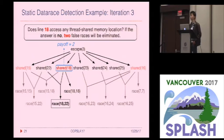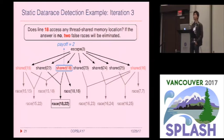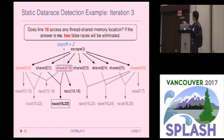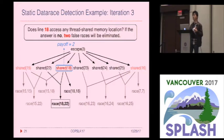In the very last iteration, we only have one question left and it has a payoff of two. At this point, Bob might decide to stop because the payoff has dropped too low and just inspect the remaining alarms manually. But let's say Bob decides to go ahead, and he finds shared(18) is actually a valid tuple. So he answers yes to this question and preserves the only real race. In conclusion, by only asking two or three questions, we are able to resolve seven out of eight false alarms, and we don't introduce any false negatives.